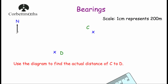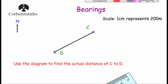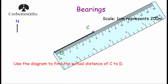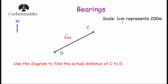Our next question: we've been given a diagram with points D and C and a scale where one centimetre represents 200 metres. The question asks us to find the actual distance from C to D. First, I join the two points and measure the length of that line — it's 6 centimetres. We've been told 1 centimetre equals 200 metres, so we multiply 200 by 6, which gives us 1,200 metres. The actual distance from C to D is 1,200 metres.